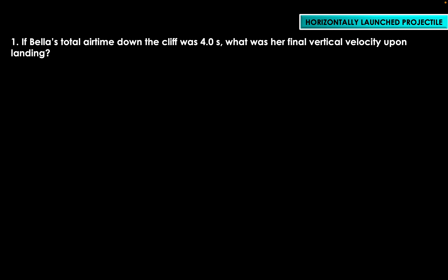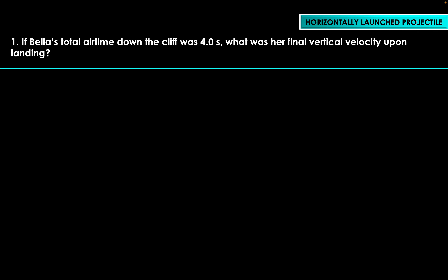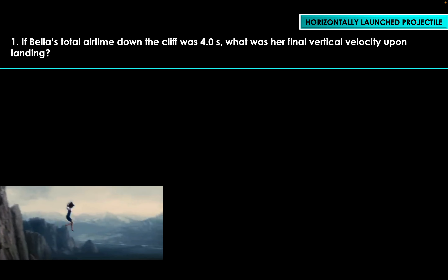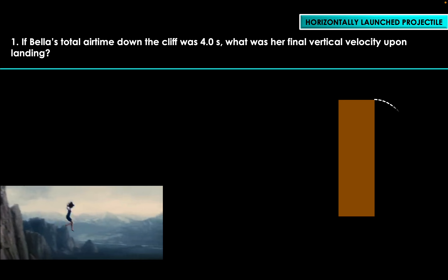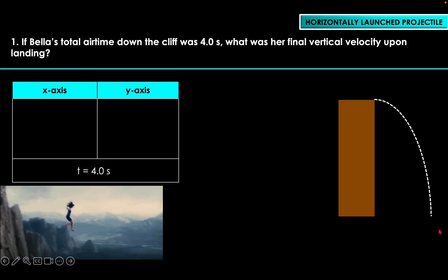Based on that movie scene, the projectile problem I came up with is: if Bella's total airtime down the cliff was 4.0 seconds, what was her final vertical velocity upon landing? So let's write down the given. In terms of the sketch, it would look something like this — it's a horizontally launched projectile because Bella was running horizontally along the cliff platform and then jumps off. The time is 4.0 seconds, and the initial vertical velocity v₀y is 0 meters per second.